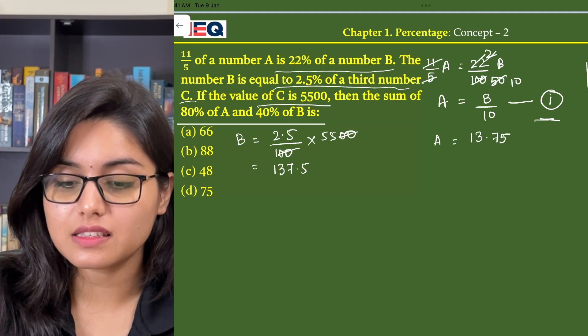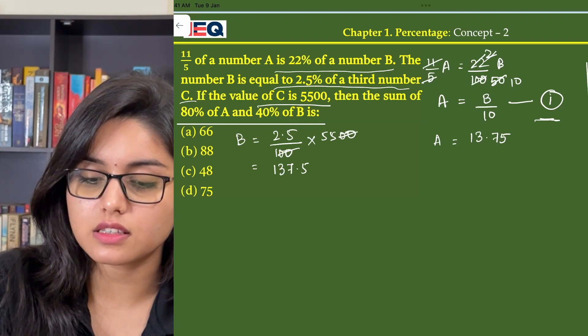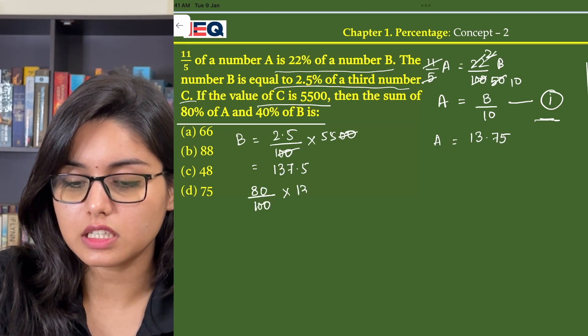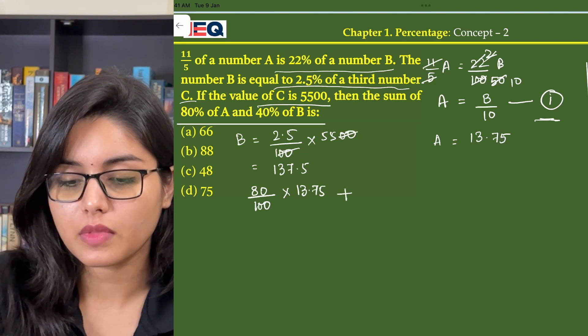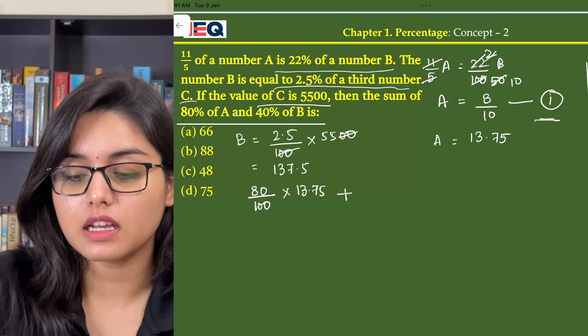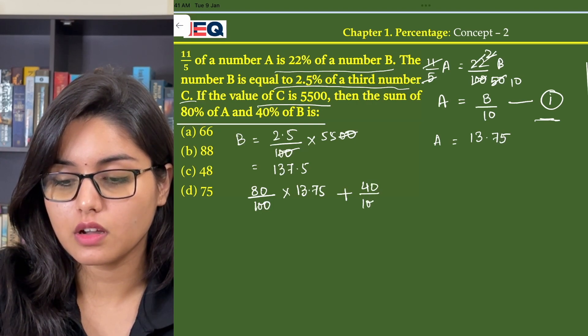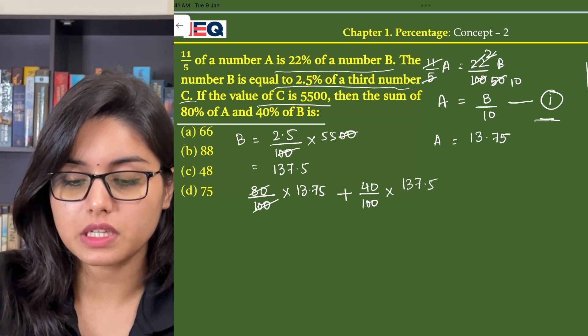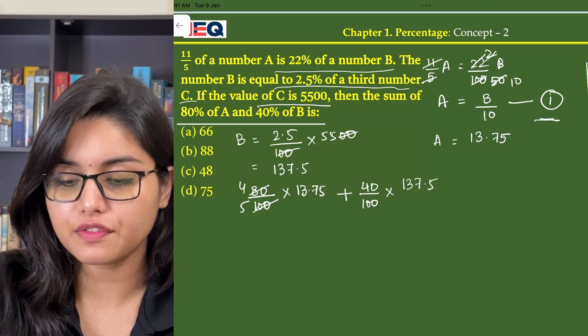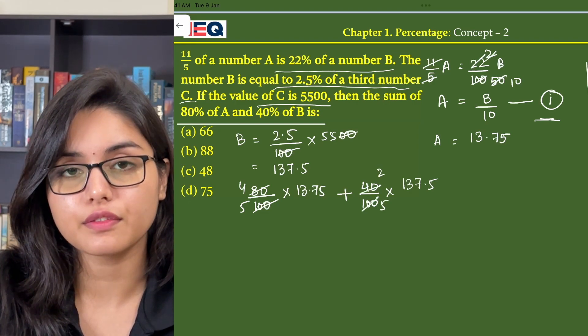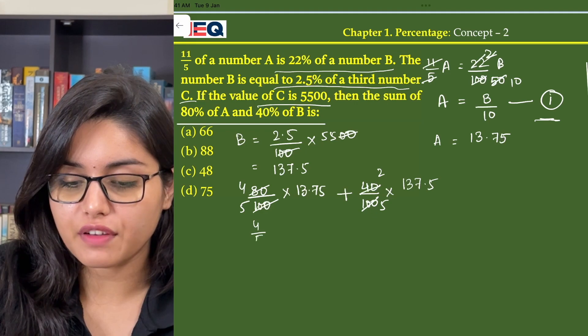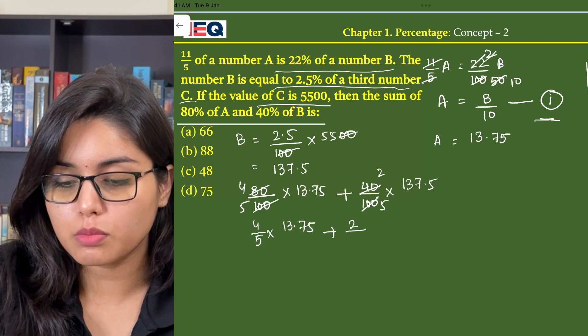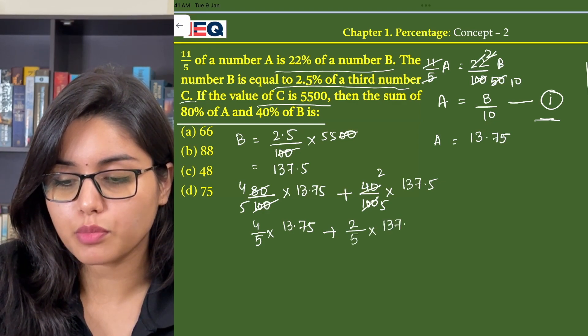Now the question says that the sum of 80% of A, so 80% of A means 80 by 100 of A, that is 13.75 plus 40% of B, that is 40 by 100 of 137.5. On dividing this by 20, we get 4 by 5 and here we get 2 by 5.